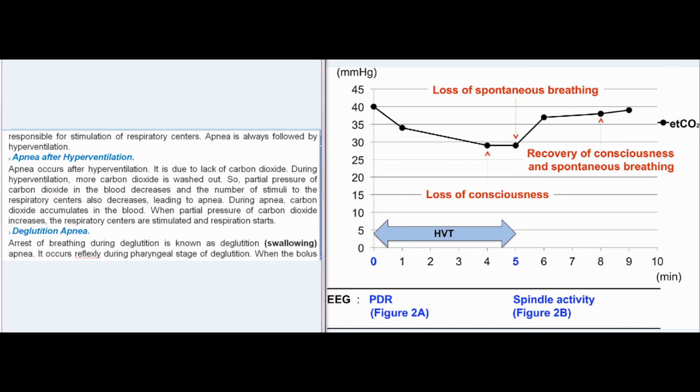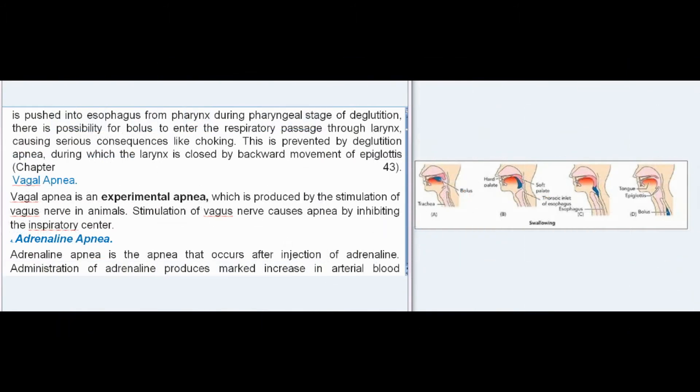When the bolus is pushed into the esophagus from the pharynx during the pharyngeal stage of deglutition, there is a possibility for the bolus to enter the respiratory passage through the larynx, causing serious consequences like choking. This is prevented by deglutition apnea, during which the larynx is closed by backward movement of the epiglottis. Vagal apnea is an experimental apnea produced by stimulation of the vagus nerve in animals, which inhibits the inspiratory center.